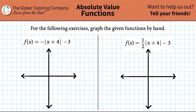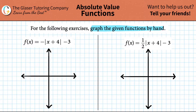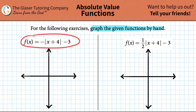For the following exercises, graph the given function by hand. We've done tons of these questions already. If you want to start from the beginning, go to the playlist — check the description below, it's called absolute value functions. This one is just going to be a run-through. Let's start with this one: f(x) = negative times the absolute value of x plus 4, minus 3.